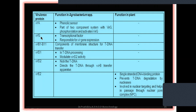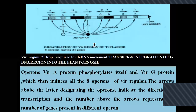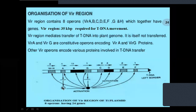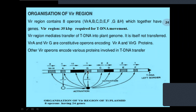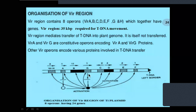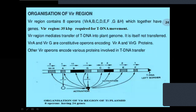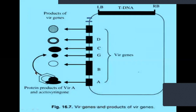VirG is responsible as a transcriptional activator. Once VirA gets activated and phosphorylation occurs, that phosphorylation activates the VirG region. VirG in turn activates all the other genes and their production of proteins. VirG is responsible for the activation of all genes including itself — it is the transcriptional activator of other loci of the Vir region. Once VirA and VirG get activated, they in turn are responsible for the Vir regulon expression.